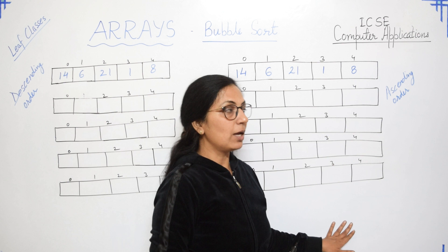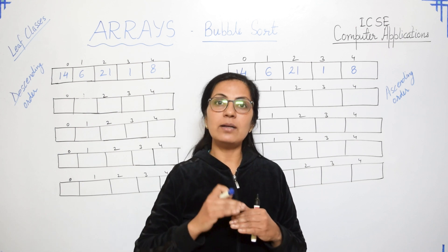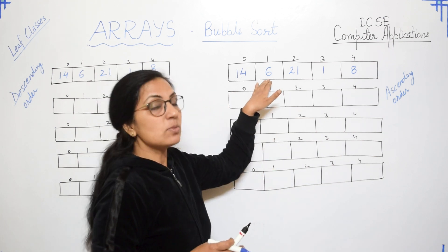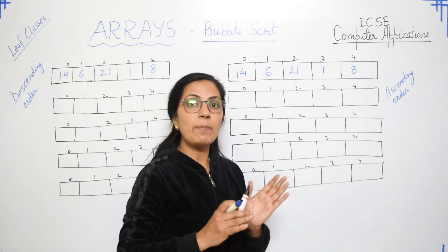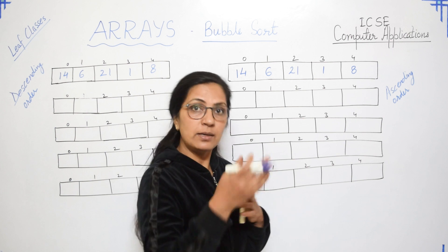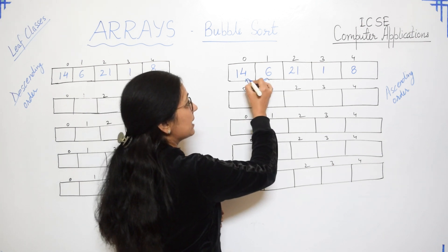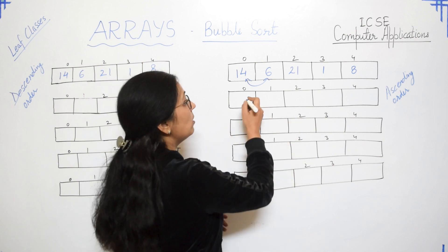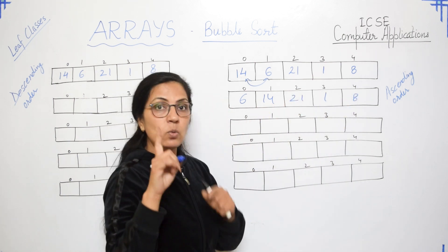First we will do sorting in ascending order. In bubble sort, the comparison is done between two adjacent subscripts. In ascending order, elements are to be sorted from smaller to bigger. So if the next element is smaller but we want it towards the left side, we swap it at that time only. Here swapping takes place when the comparison is done. So for 14 and 6 — 6 is smaller, so in ascending order 6 has to come to the left side. Swapping takes place: 6, 14, 21, 1, 8. One time, only one swapping will take place.